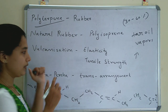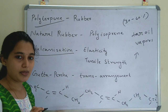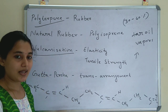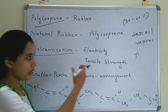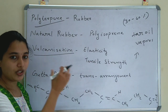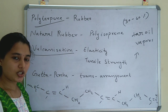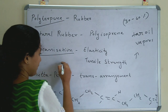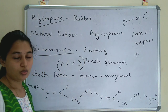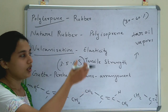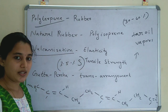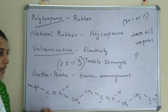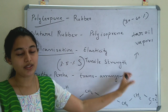Vulcanization is an important term — it is the process of converting rubber into a form with more tensile strength and elasticity. Vulcanization involves heating the rubber sheets with 3 to 5% sulfur. Sulfur is linked in between the natural rubber chains, giving the rubber greater tensile strength and elasticity.